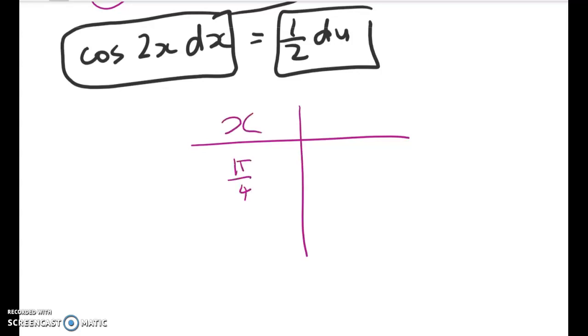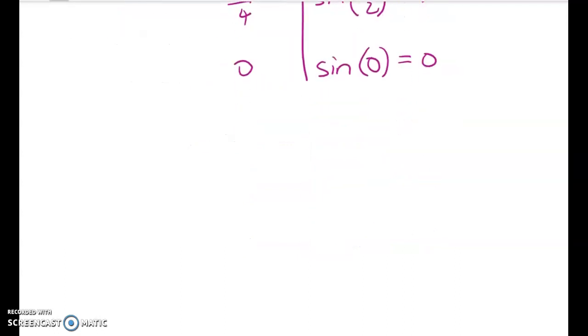So my x limits are these. But we know that u is equal to the sine of 2x. So the sine of 2x is sine of pi on 2, which is equal to 1. And the sine of 2x is equal to the sine of 0, which is equal to 0. So we can start to rewrite this integral.